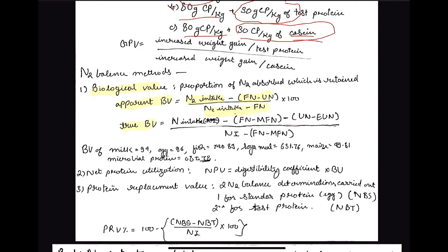Apparent BV = (Nitrogen intake − Fecal nitrogen − Urinary nitrogen) / (Nitrogen intake − Fecal nitrogen) × 100. For true biological value, we subtract metabolic fecal nitrogen — the nitrogen from mucosal cells and other substances released in the intestine — from fecal nitrogen, because that nitrogen is not from the feed itself. Similarly, endogenous urinary nitrogen is subtracted from urinary nitrogen, giving true biological value.